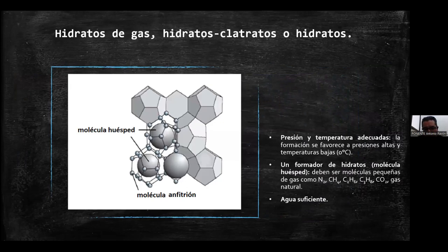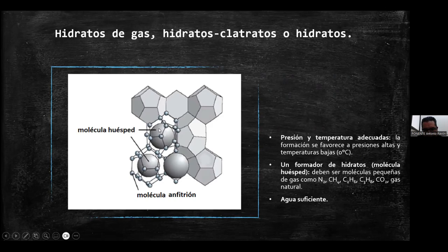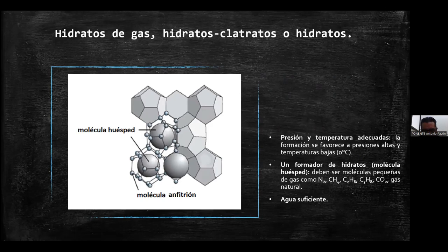Los hidratos de gas son sólidos cristalinos formados solamente por gas y por agua, en donde el agua forma cavidades que atrapan una molécula de gas. Para que se formen estos compuestos se necesitan 3 condiciones: presiones y temperaturas adecuadas —la formación se favorece a altas presiones y bajas temperaturas—, un formador de hidrato que es el gas, y una relación adecuada entre el agua y el gas. Si alguna de estas 3 condiciones no se cumple, no es posible la formación de hidrato.